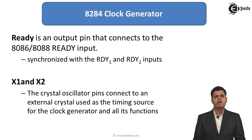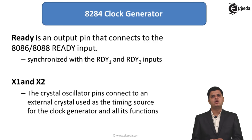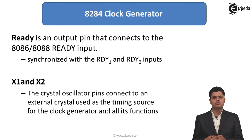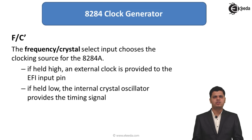The next pins are X1 and X2. The clock frequency provided to the 8284 comes through X1 and X2, which connect to an external crystal oscillator. The 8284 generates a clock, but requires these oscillations from the crystal oscillator connected at X1 and X2, which serves as the timing source for the clock generator and all its functions.